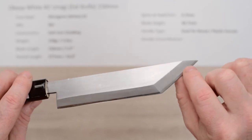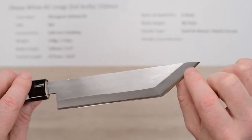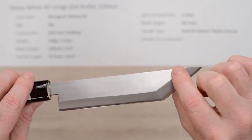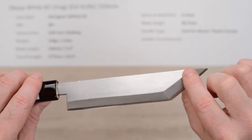You can see where the core steel peeks out from that cladding, that softer iron cladding.